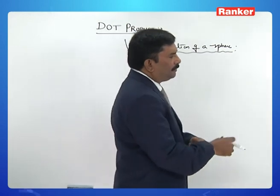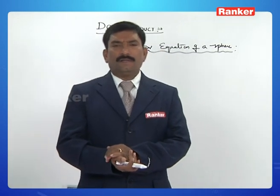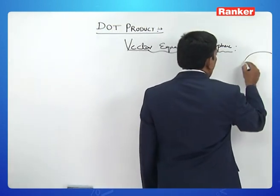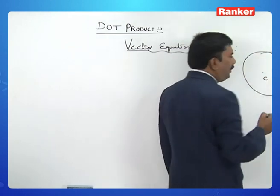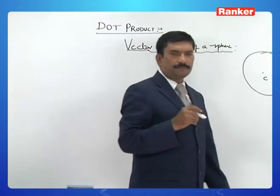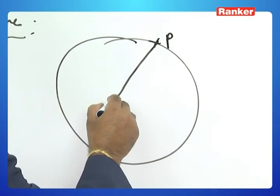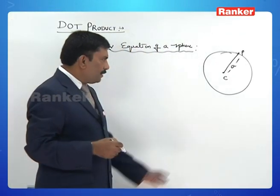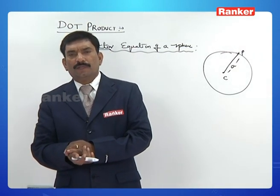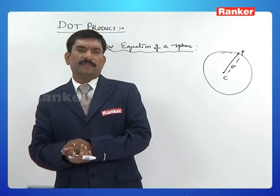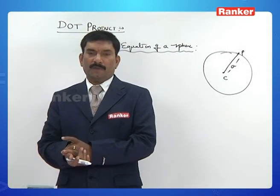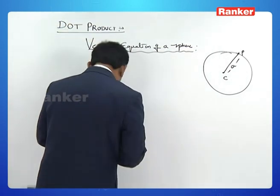A sphere is a 3D concept; a circle is a 2D concept. Let S be a sphere, C be a fixed point in space, and P be a moving point such that the distance from P to C remains constant. The locus of P is called a sphere. I want to find out the equation of a sphere having center C whose position vector is c̄ and radius a units.